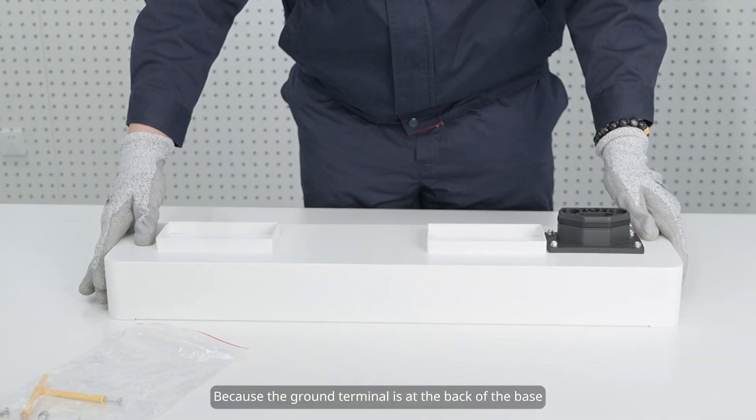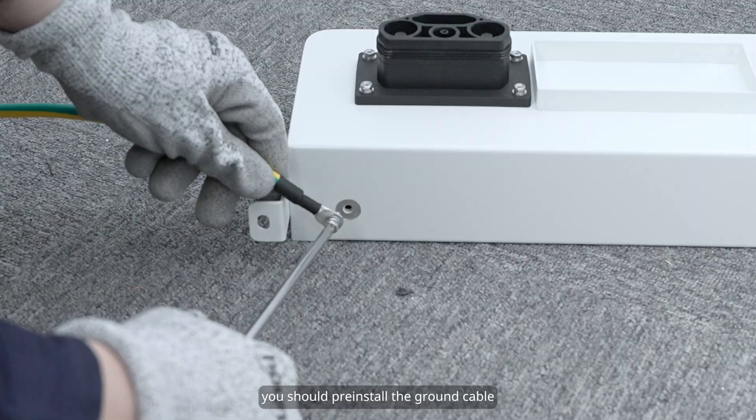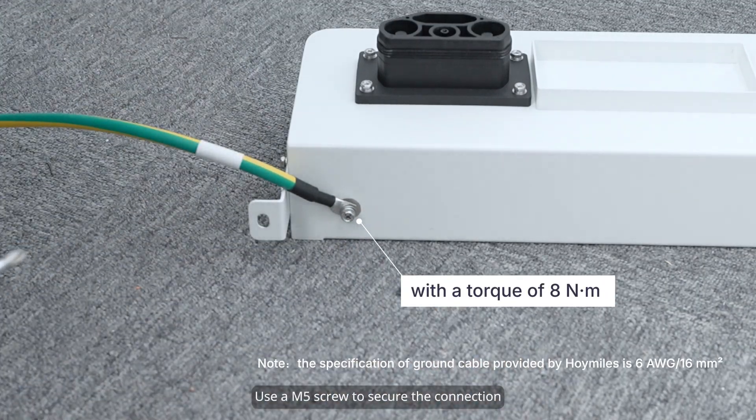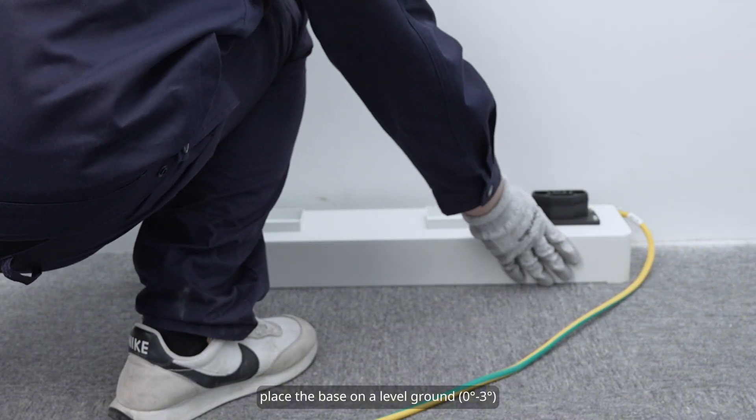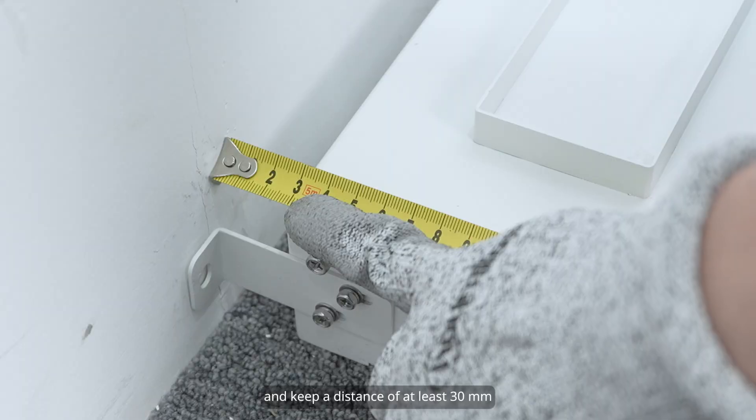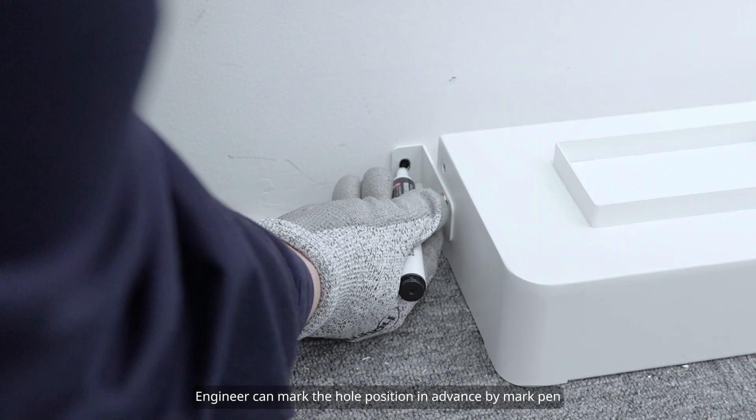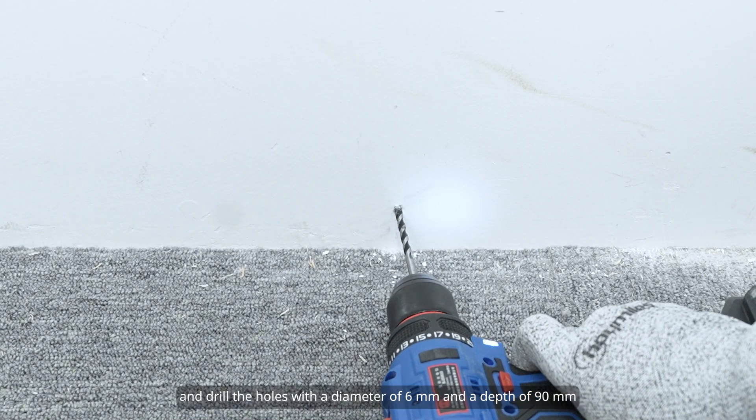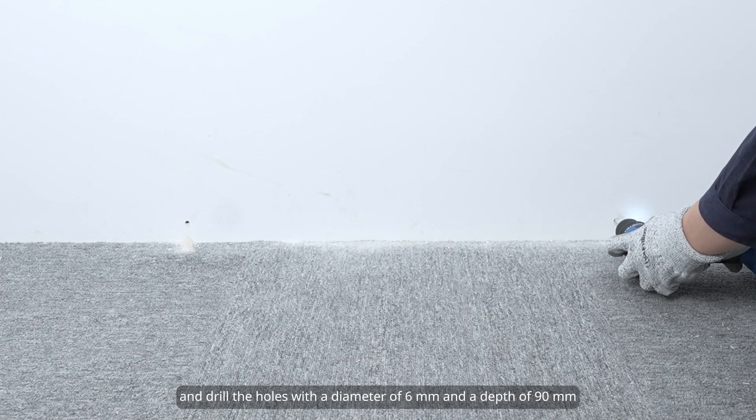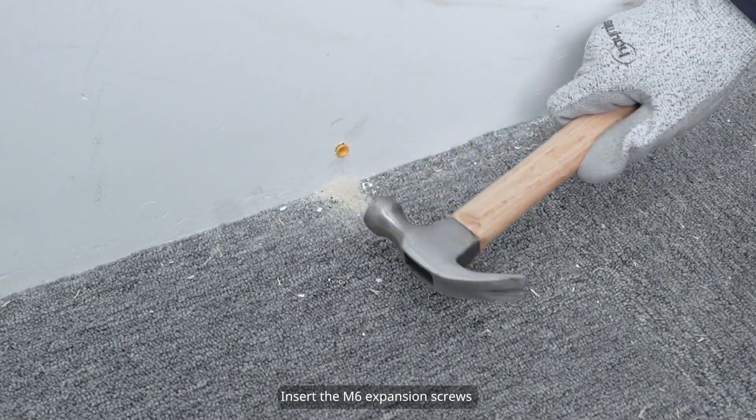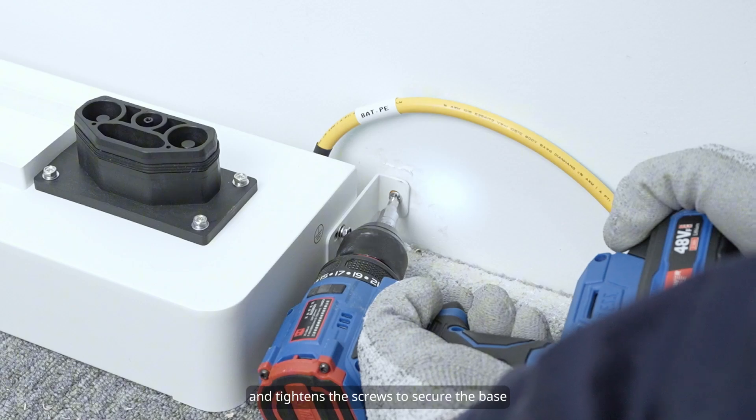Because the ground terminal is at the back of the base, you should pre-install the ground cable. Use M5 screw to secure the connection. Place the base on a level ground, parallel to the wall, and keep a distance of at least 30 millimeters. Engineer can mark the hole position in advance by mark pen, and drill the holes with a diameter of 6 millimeters and a depth of 90 millimeters. Insert the M6 expansion screws and tighten the screws to secure the base.